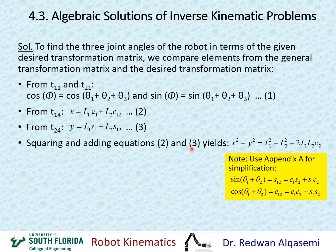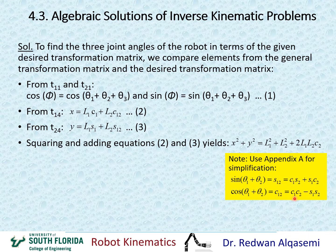If I square and add equations two and three, I get X² + Y² on the left side, which equals L1² + L2² + 2*L1*L2*C2 after simplification using the sine and cosine addition identities in Appendix A. In this resulting equation, the only unknown is C2, so I can use it to find cosine(theta2).